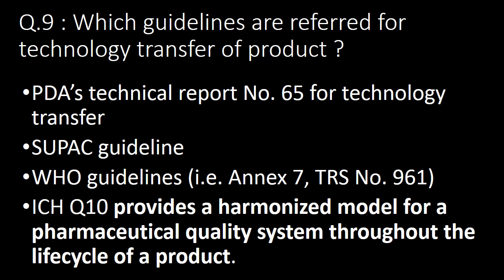Which guidelines are referred to for technology transfer of a product? There are multiple guidelines available. Four key ones are: first, PDA Technical Report Number 65; second, SUPAC guidelines; third, WHO guideline Annex 7, TRS Number 961; and fourth, ICH Q10, which provides a harmonized model for the pharmaceutical quality system throughout the life cycle of a product.